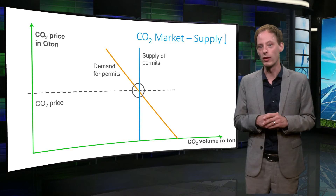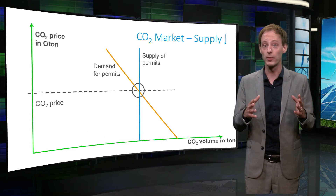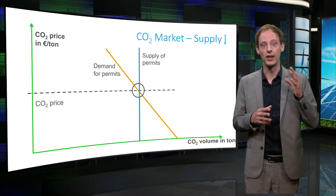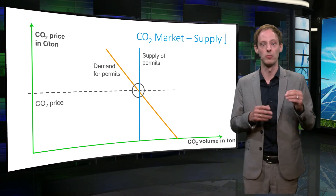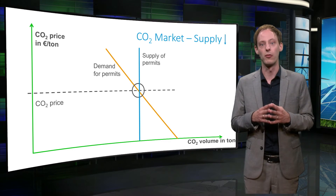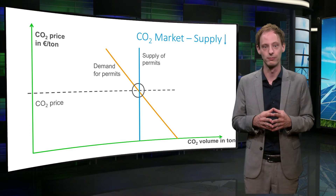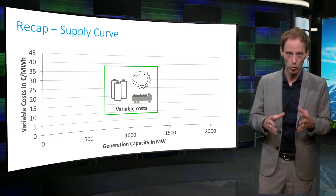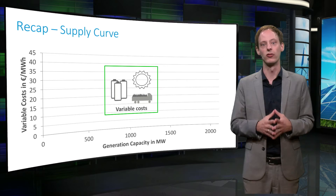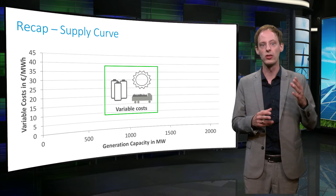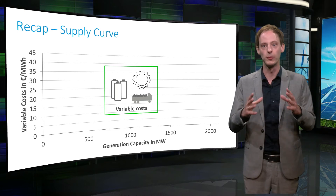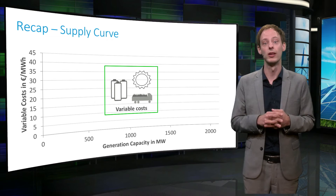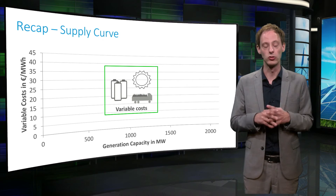As there are now fewer credits available, the producers who are willing to pay more for them set the price. This means that capping total emissions creates a market for CO2 permits, and the price in this market affects the electricity market. In day-ahead electricity markets, producers bid their electricity at variable cost, and bids are ranked from the lowest to the highest in order to meet demand at the lowest possible cost.